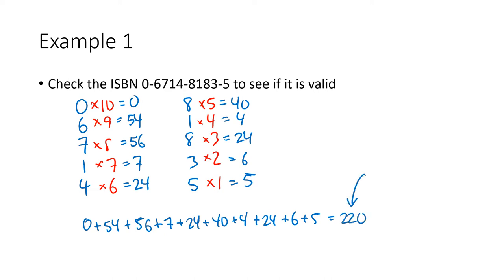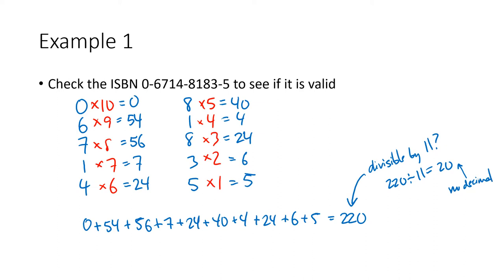What we're checking is whether 220 is divisible by 11. Dividing 220 by 11 gives 20 with no decimal part, meaning 11 goes in evenly with a remainder of 0. So 220 is divisible by 11, and this ISBN is valid.